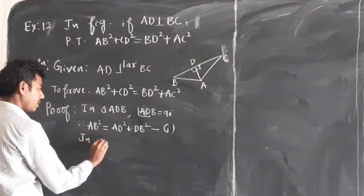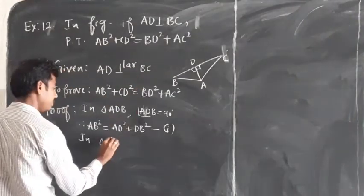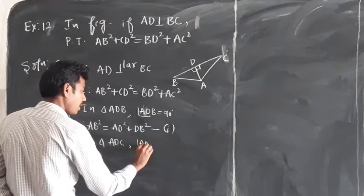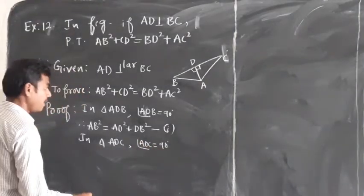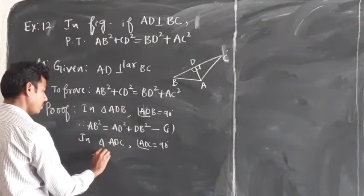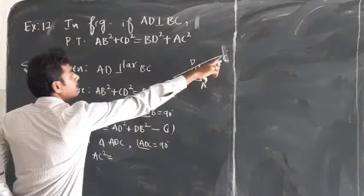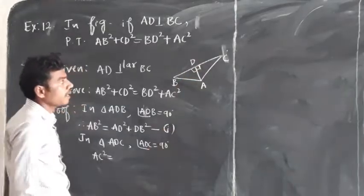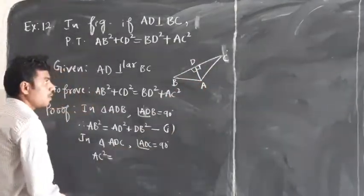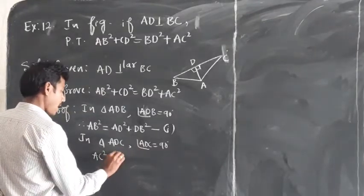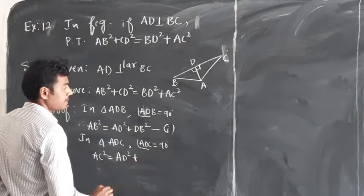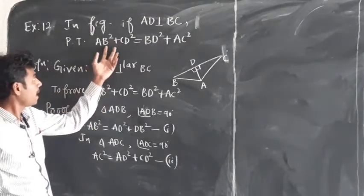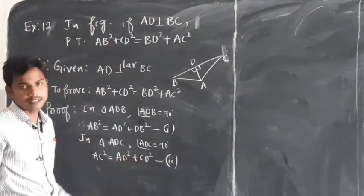In triangle ADC, angle ADC is equal to 90 degrees. The side opposite to the right angle is the hypotenuse, so AC square is equal to AD square plus CD square. We call this equation number 2. Now, what we require is AB square plus CD square — here is CD square.